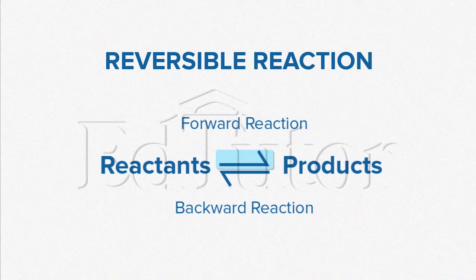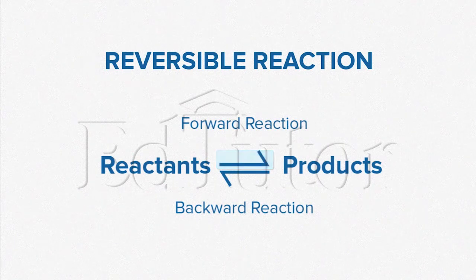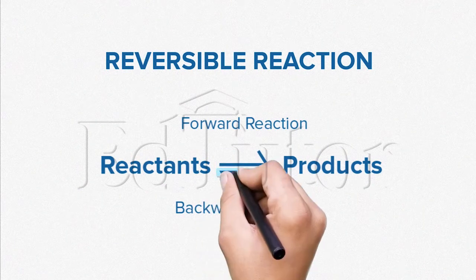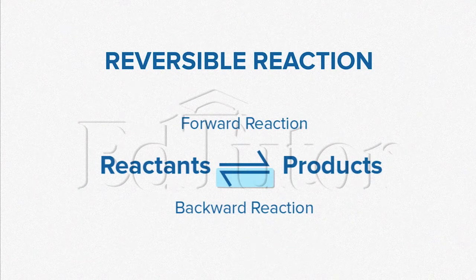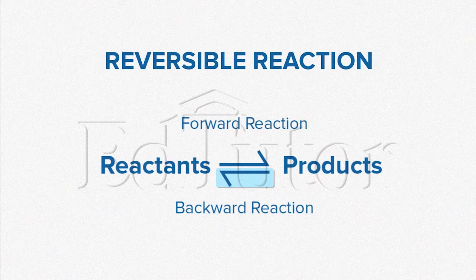A forward reaction is where the reactants react to form a product. A reverse or backward reaction is known as a reaction where the products change back into reactants.